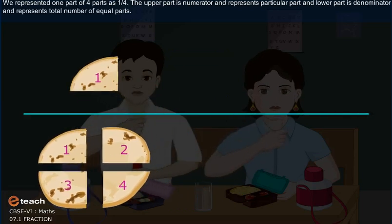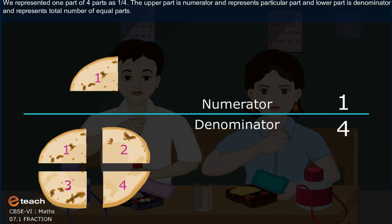We represented one part of four parts as 1/4. The upper part is the numerator and represents particular part. And lower part is the denominator and represents total number of equal parts.